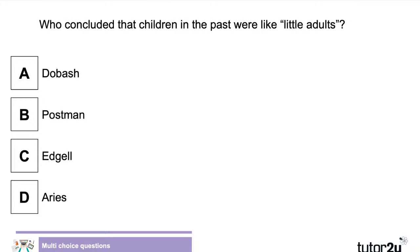Who concluded that children in the past were like little adults? Is that A, Daybash; B, Postman; C, Edgel; or D, Aries? The answer is D, Aries — well done. Philippe Aries looked at paintings and portraits from the medieval period and saw that children were dressed and behaving similarly to the adults, though whether that's a valid way of determining what childhood was like at the time, we can debate.